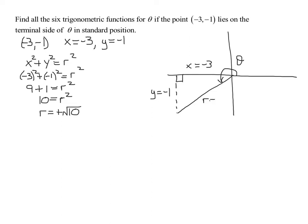Because r is always positive. Always make sure to check if the radical can simplify. The square root of 10 doesn't simplify, because 10 is just 2 times 5. So we leave r as the square root of 10 — don't approximate it, keep the exact value. Now we're ready to find all six trig functions.